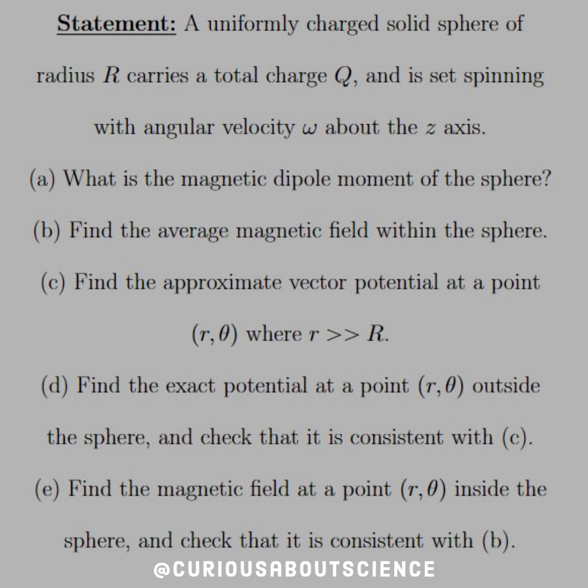This has a total charge of Q and is set spinning with angular velocity omega about the Z axis. We want to know five parts. Part A, what is the magnetic dipole moment of the sphere? Part B, find the average magnetic field within the sphere. Part C, find the approximate vector potential at a point r, theta, where r is greater than the radius of the sphere.